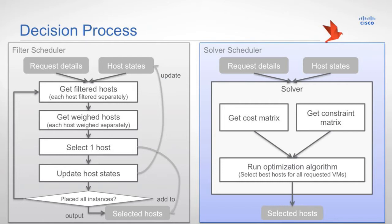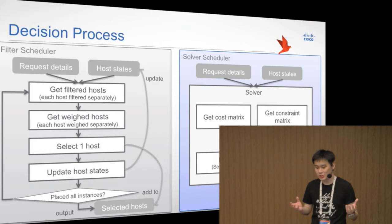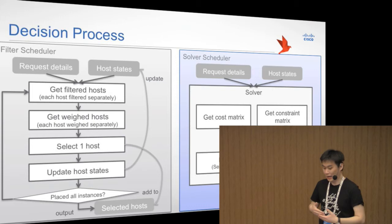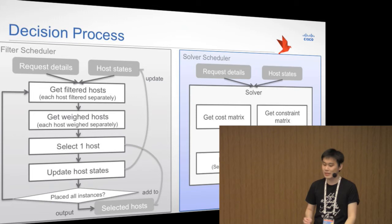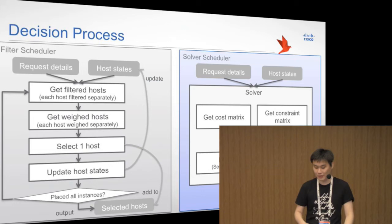What the solver scheduler is doing is different. What the solver scheduler will do is that it will grab the complete requested VMs and all the host states and throw all those information into a solver. And the solver will run an optimization algorithm that makes use of all those information and then generate an overall optimal solution for what the best host is for all the requested VMs. In order to do that, we have a different way to construct our constraints and costs.